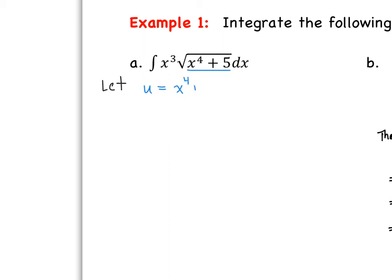Why would we want that? Well, if we let u be x to the fourth plus 5, then du represents the derivative. So what's the derivative of x to the fourth plus 5? It gives us 4x cubed dx. So that takes care of the x cubed and the dx, but we have to get that portion by itself. So if we divide both sides by 4, we get one fourth du equals x cubed dx.